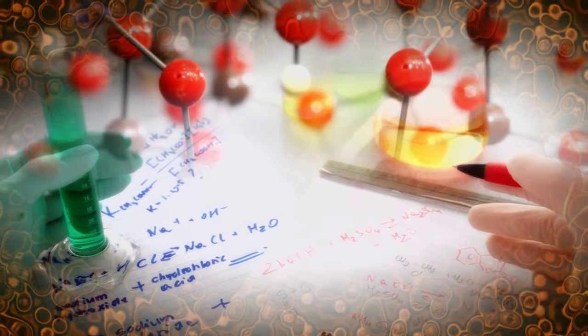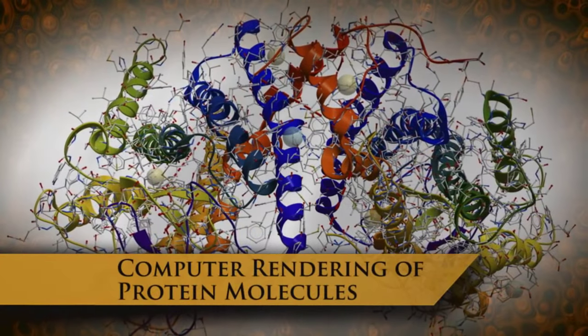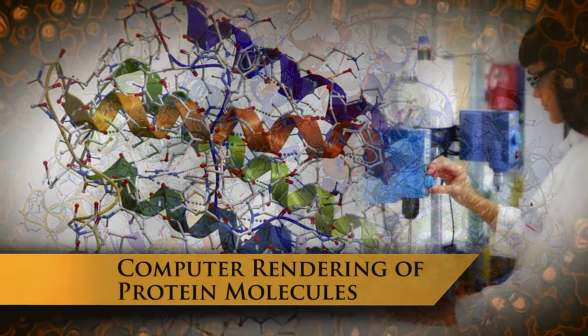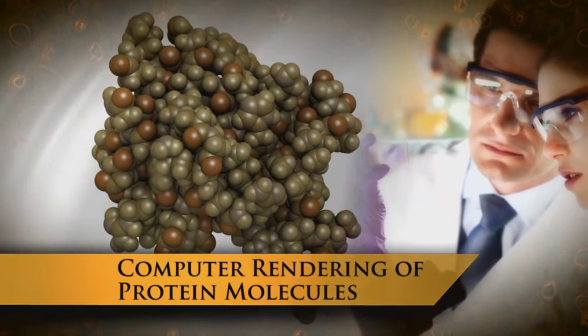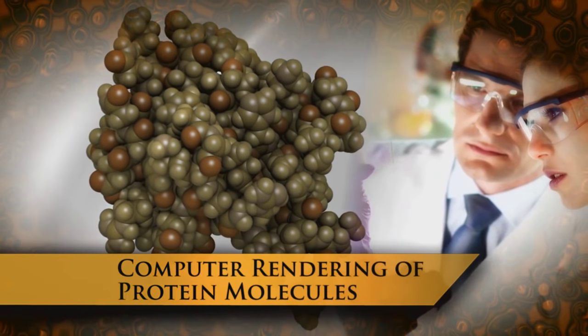Proteins must appear in exact sequences to cause specific chemical reactions or build specific structures within the cells. This action is called specificity. It is because of specificity that proteins cannot substitute for one another. They are as different in purpose as an axe, drill, hammer or screwdriver.